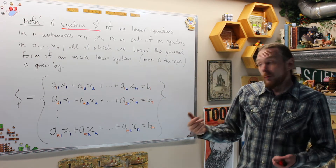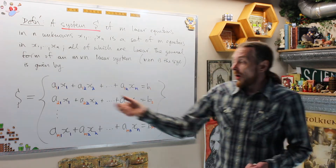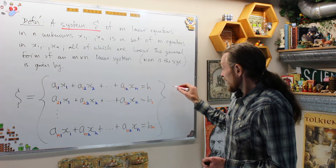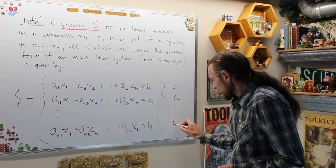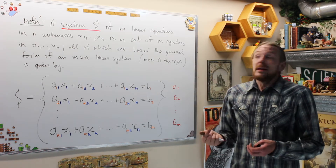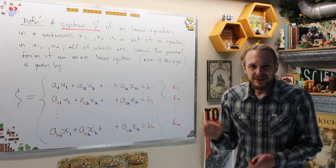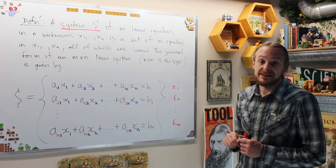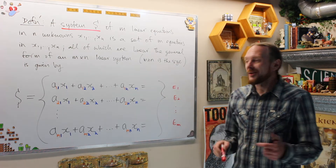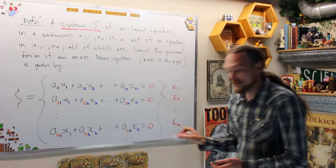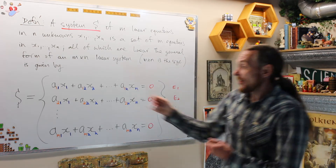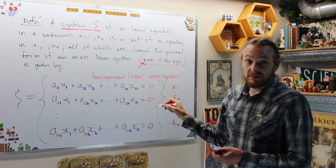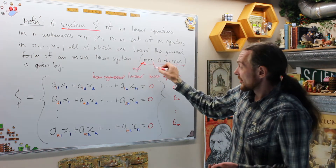All of the equations are linear — every one has coefficients that change, which is why we've double-indexed. Every equation is either a constant term or a multiple of a single variable. We have equation one, equation two, dot dot dot, equation M. We call M by N the size of the system: M is the number of equations or rows, and N is the number of variables.